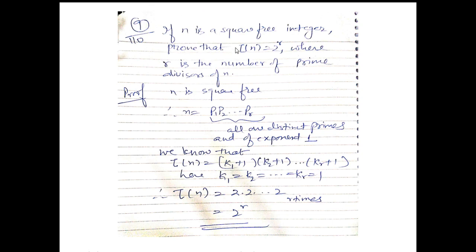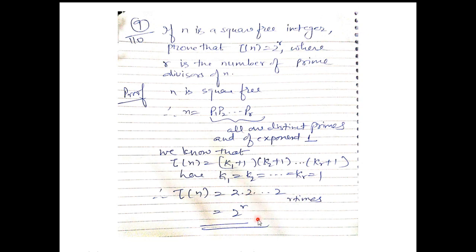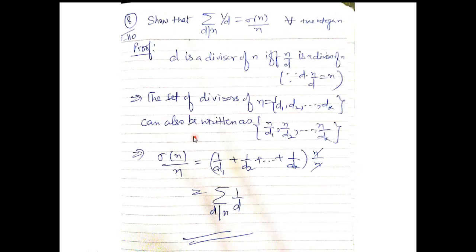Now let us solve this problem: if n is a square-free integer, show that τ(n) = 2^r, where r is the number of prime divisors of n. Since n is square-free, n = p₁p₂···pᵣ where all primes have exponent 1. Using the formula τ(n) = (k₁+1)(k₂+1)···(kᵣ+1), and since each kᵢ = 1, we get τ(n) = 2·2·2···(r times) = 2^r.